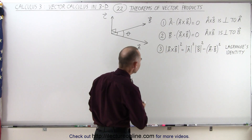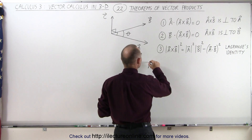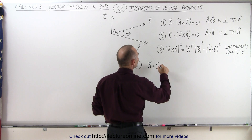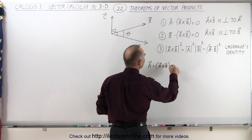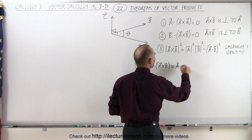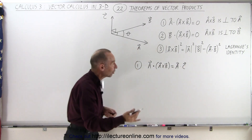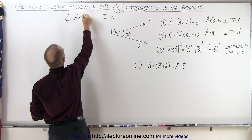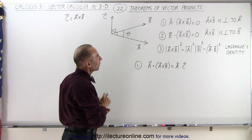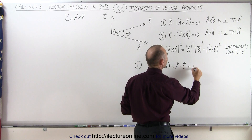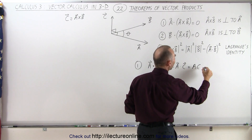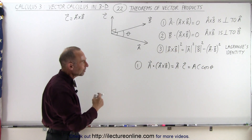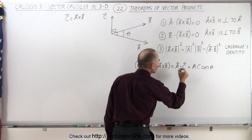Let's explore that. To explain theorem one: if we have vector a and we do a dot product with the cross product a × b, that is equal to a dotted with c, where c is the resultant of a × b. So we say that a · c equals the magnitude of a times the magnitude of c times the cosine of the angle between them — that's the definition of the dot product.